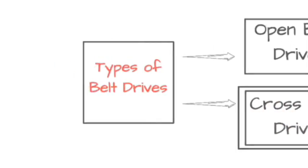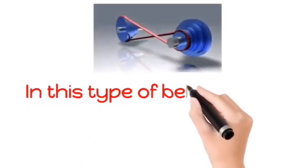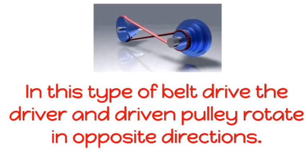Now, we will see cross belt drive. What is a cross belt drive? In this type of belt drive, the driver and the driven pulley rotate in opposite directions.